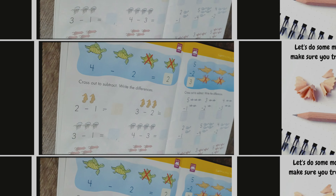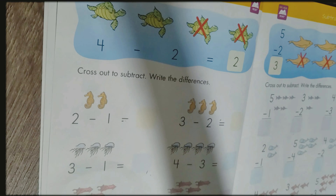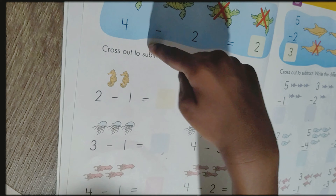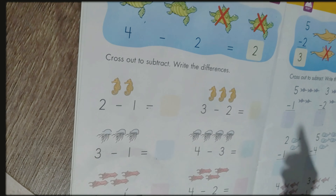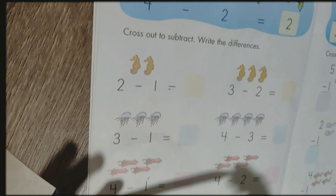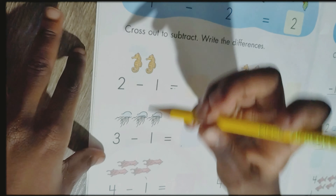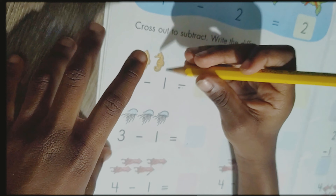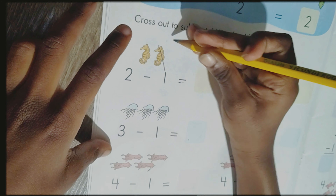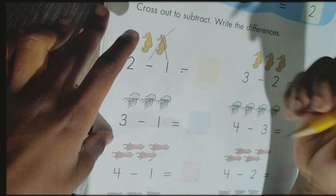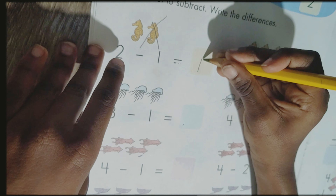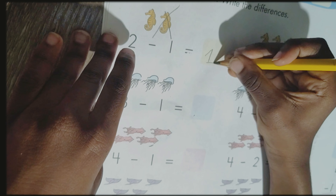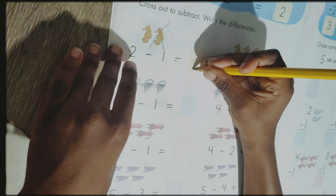Alright, what does it say? Can you read the direction? Cross out the subtracted number and write the difference. Alright, so now what am I doing here? How many am I crossing out? One. So let's cross out one. How many do we have left? One. Very good, Kaylin. Good job.